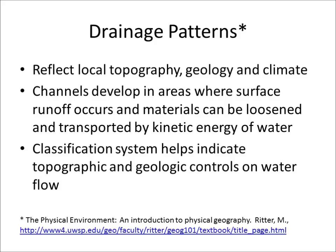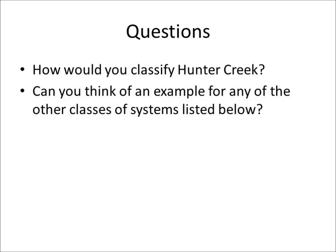Much of what I'm going to talk about here is from a book called The Physical Environment, which is an introduction to physical geography by Michael Ritter — there's a link below. Here are a few questions to think about as you watch this: How would you classify Hunter Creek? And can you think of an example for any of the other classes of drainage systems listed below?